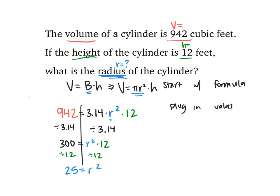To get r totally by itself, I would take the square root of both sides, and that tells me that my radius would be 5.